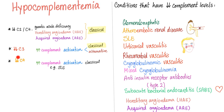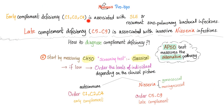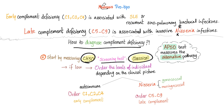We've talked about hypocomplementemia. You have decreased level of C4 in lupus. You can also have decreased C3 and C4. Early complement deficiency — C1, C2, C4 — is associated with lupus. Late complement deficiency — C5 to C9 — is associated with Neisseria infections. To diagnose complement deficiency, we start by measuring CH50. It's a screening test measuring the classical pathway. If the classical pathway is over-activated, CH50 will be decreased — this is called over-consumption. If it's low, we order more tests.